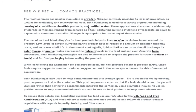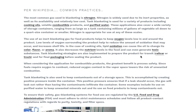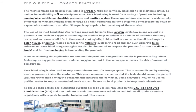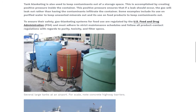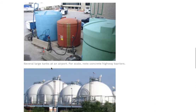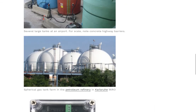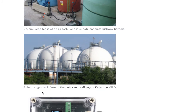You can search Wikipedia to study these needs. Here is a typical tank — this one is shown at an airport, and you can get a sense of the size compared to the concrete highway barriers nearby. Here is also a spherical gas tank farm.